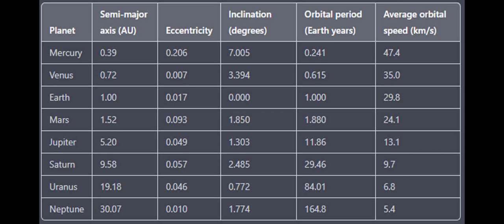To counteract this effect, satellites in low Earth orbit need to use on-board propulsion systems to periodically boost their altitude and maintain their orbital speed. For objects in higher orbits, such as geostationary satellites or some types of space debris,